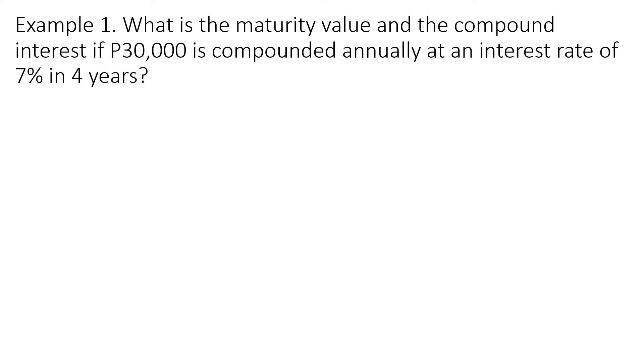The given in example 1 are: First, the value of P or the principal amount which is P30,000. M which is equal to 1 because the amount is compounded annually, so that is compounded once a year. I^m which is the rate is 7% or in decimals, 0.07. And the value of T is 4, expressed in number of years. We are going to solve for the value of F first, the maturity or the future value.